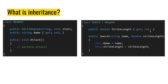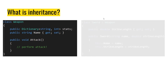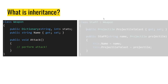I also have something unique to sword — it's not defined on weapon, it's strike length. That's because sword requires a strike length. Then I have a constructor that has a name. Name is not defined on sword, it's defined on weapon, but sword is a weapon, so sword has a name. I'm also setting the strike length from the constructor. Now when I create a sword object, I can call the attack method on sword, because sword is a weapon.